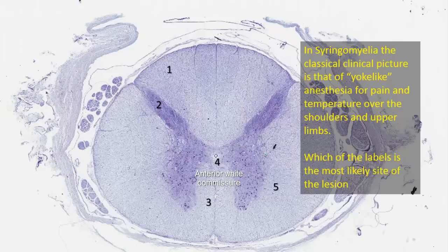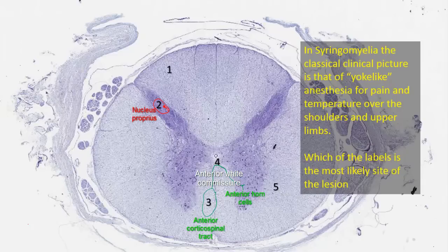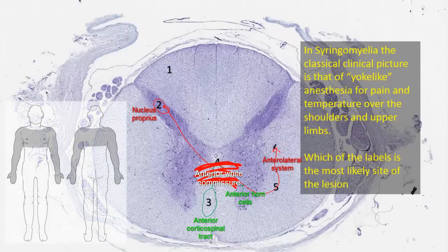Destruction of these crossing fibers results in loss of pain and temperature sensation, because here the fibers constituting the anterior and lateral spinothalamic tracts are crossing. Motor function will also be affected, because some fibers of the anterior corticospinal tract cross at the anterior white commissure to terminate on anterior horn cells. The nucleus proprius gives rise to fibers that cross in the anterior white commissure and ascend in the ventral and lateral spinothalamic tract. Destruction of these fibers results in the yoke-like anesthesia — loss of pain and temperature sensation over the shoulders and upper limbs.